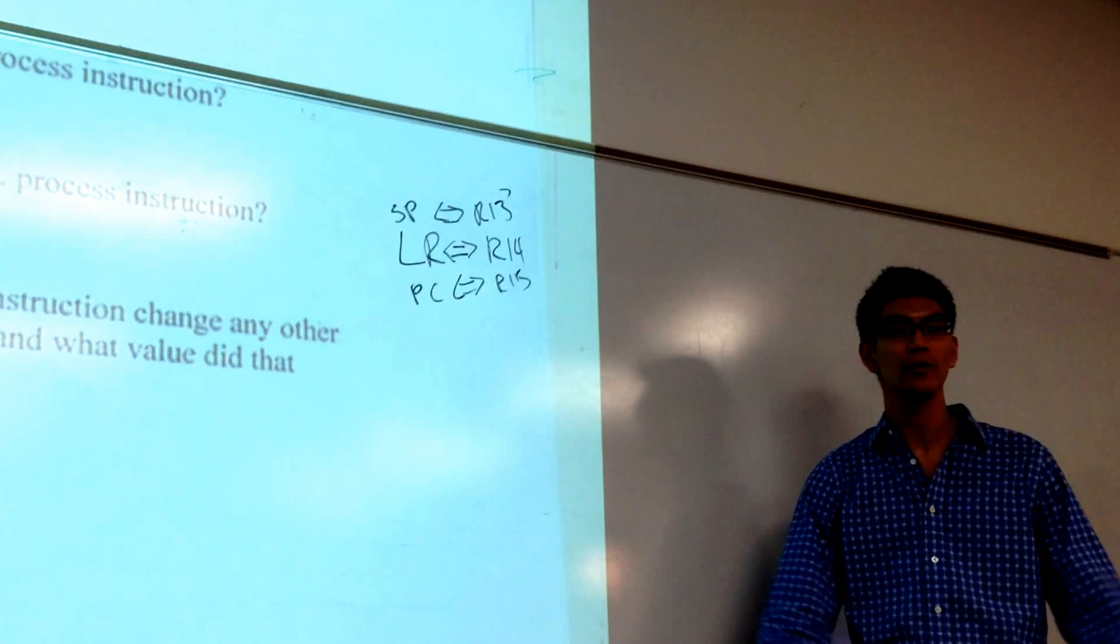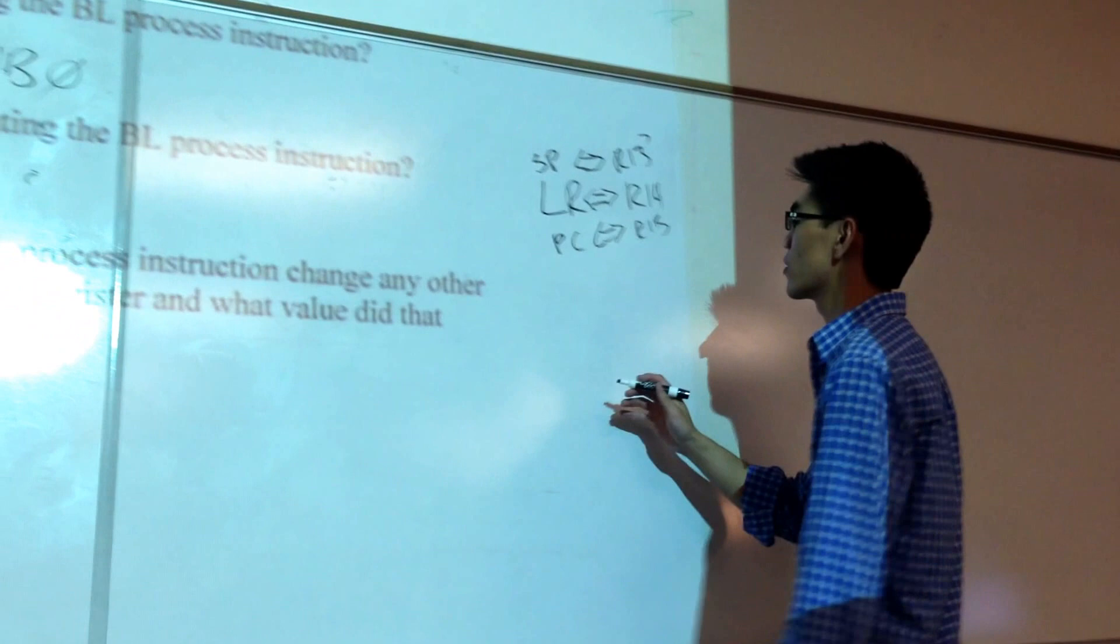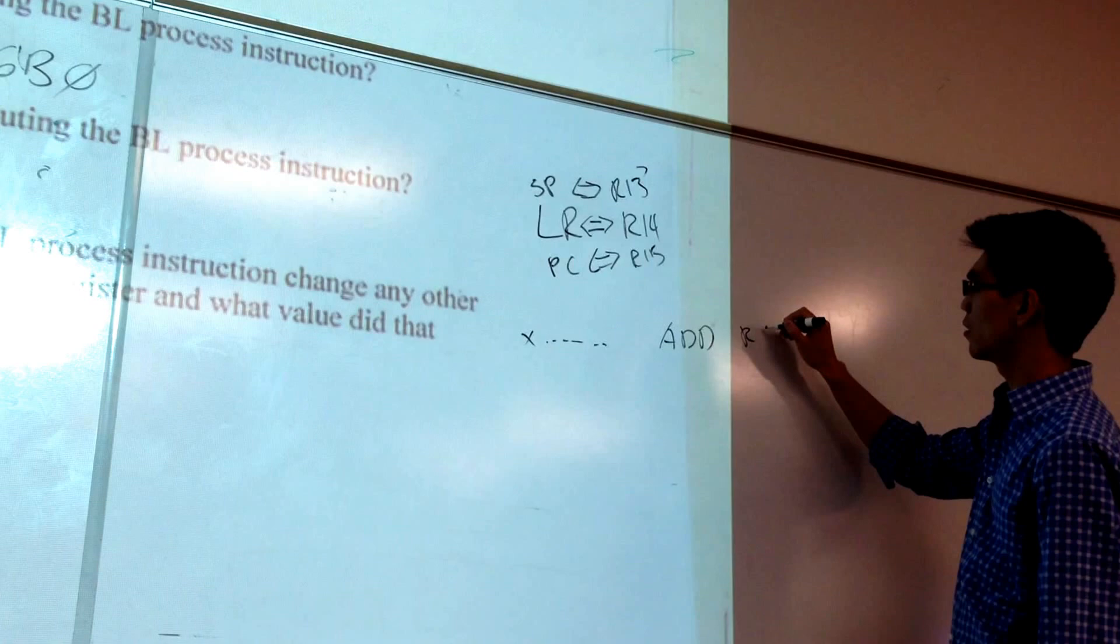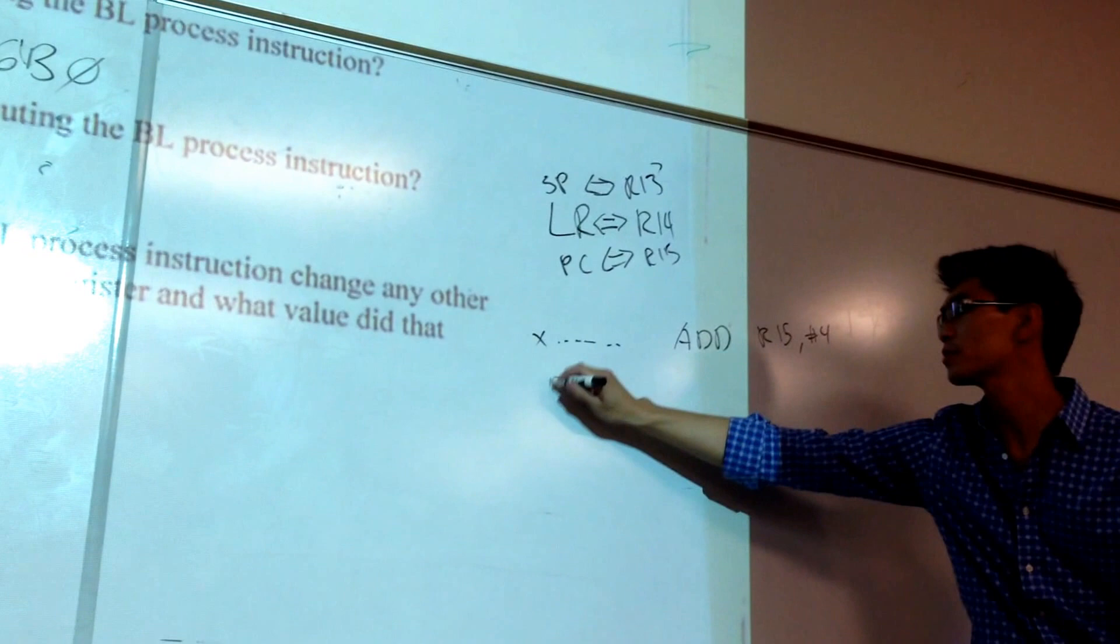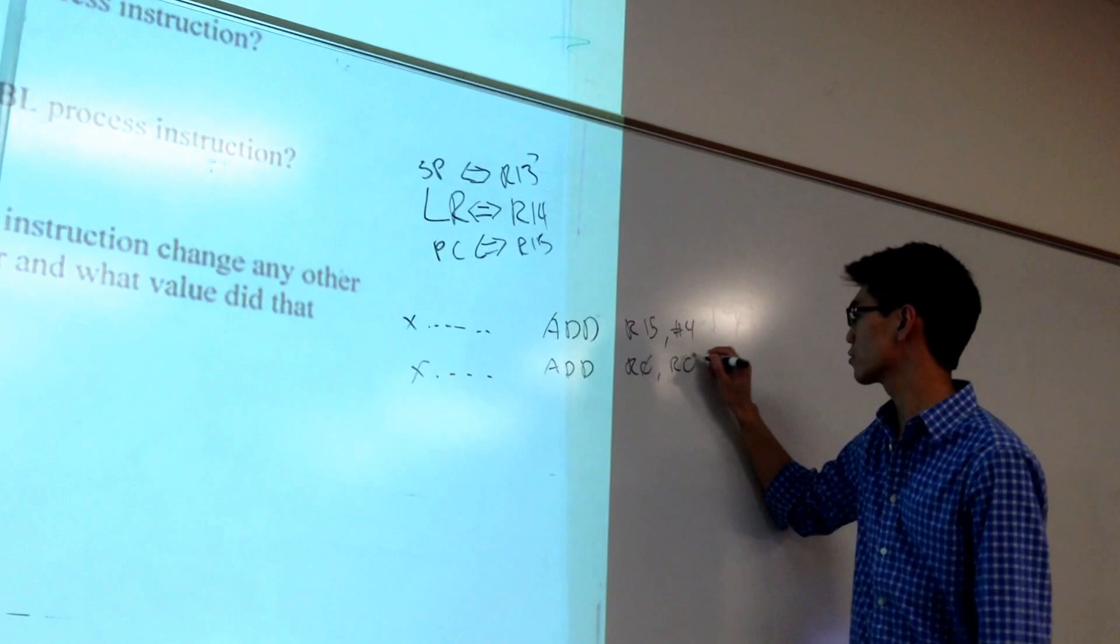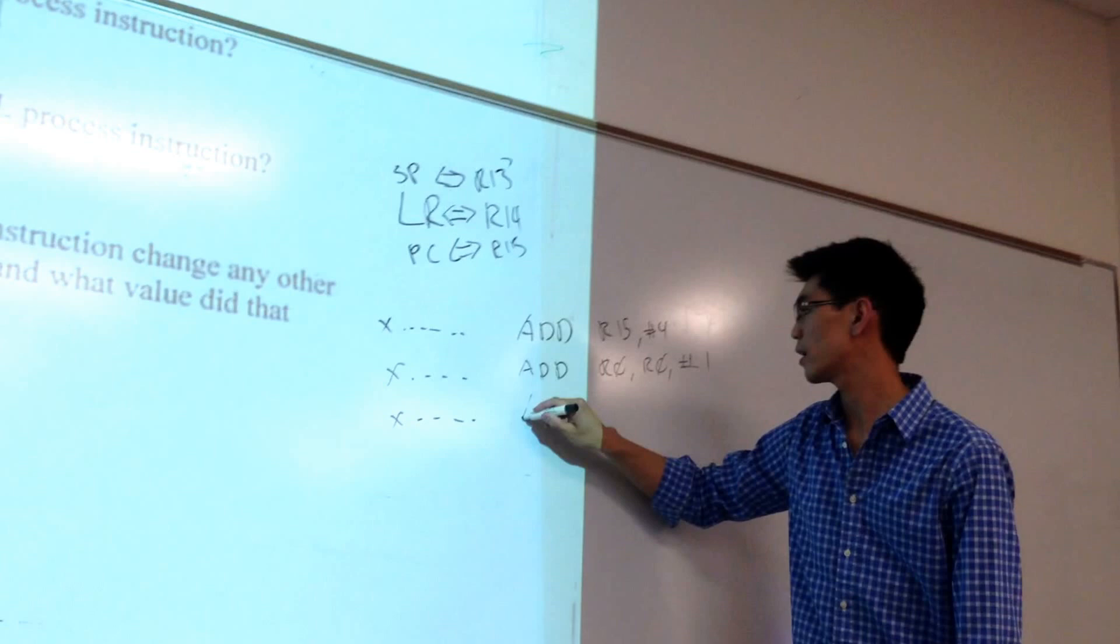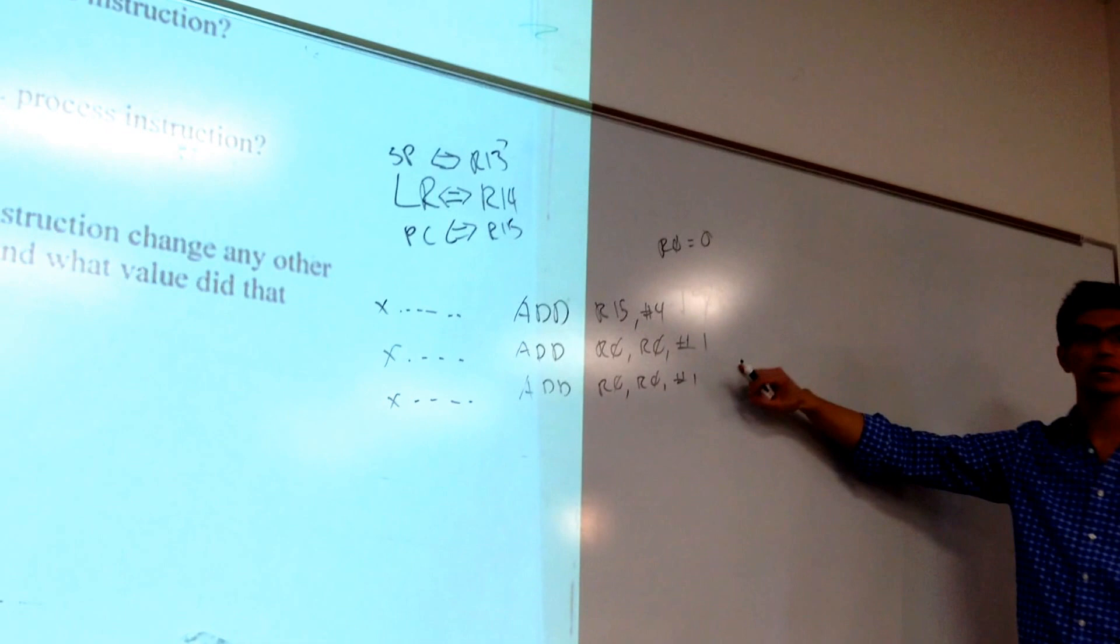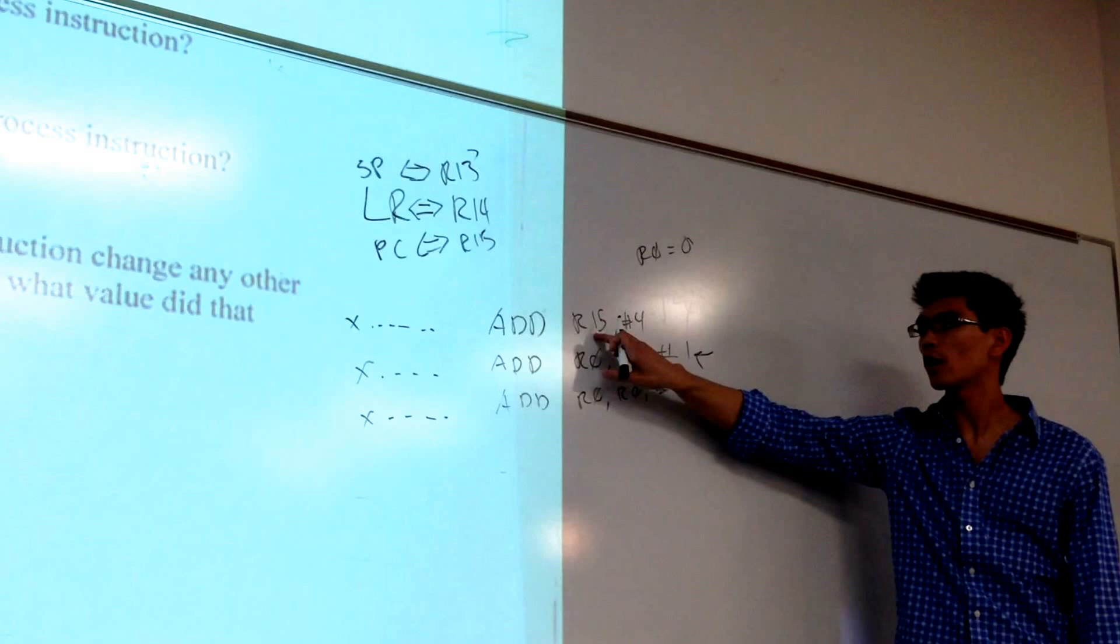I could have some address here, right? Of an instruction that does add R15, 4, right? And then I have some instruction here, right? Like, add R0, R0, 1. And then here, at my next, I have add. And say R0 is initially 0. Right? What's going to happen here? Yeah. It's going to skip the second instruction. If I don't know that R15 is the PC, I can't answer this question. Do you know what I mean? I'll get it wrong. Because I'll just go, oh, I don't know why they did this one.